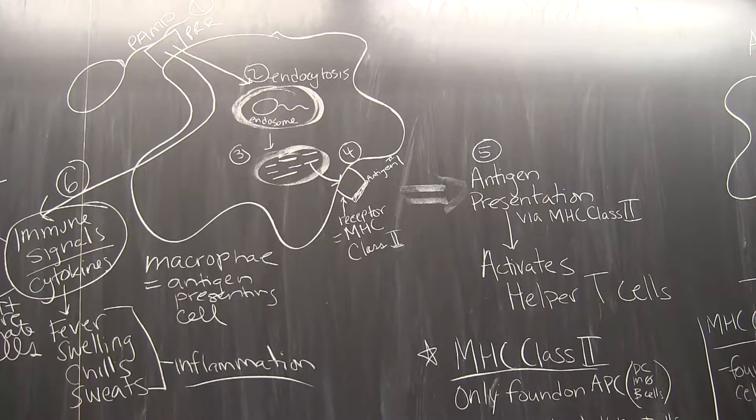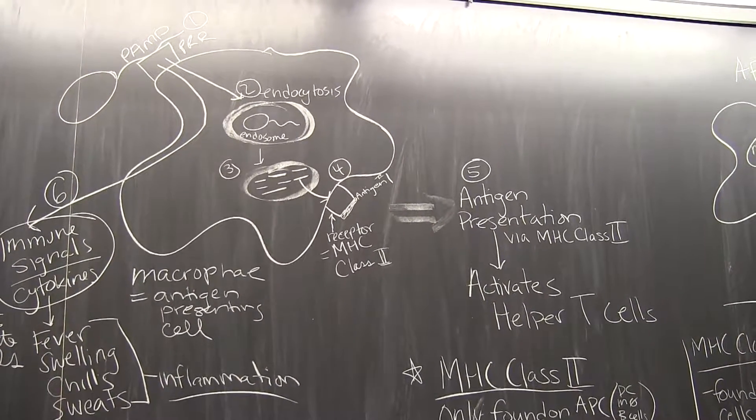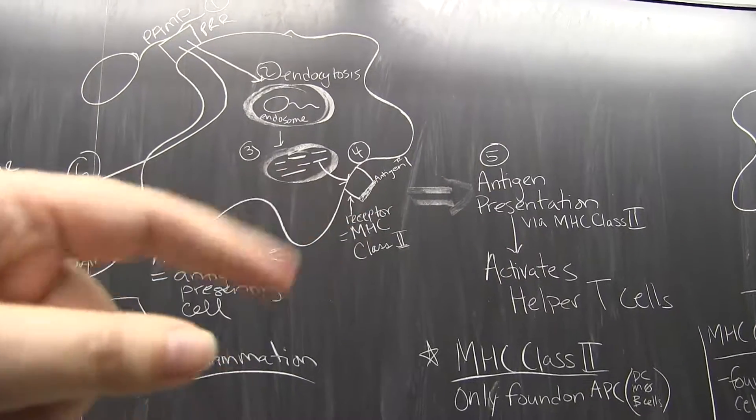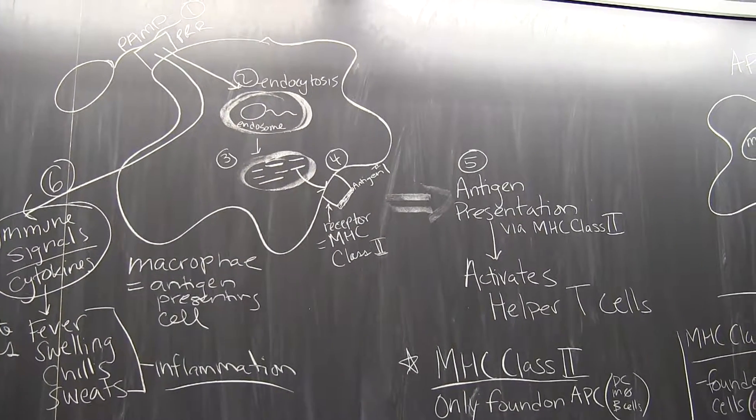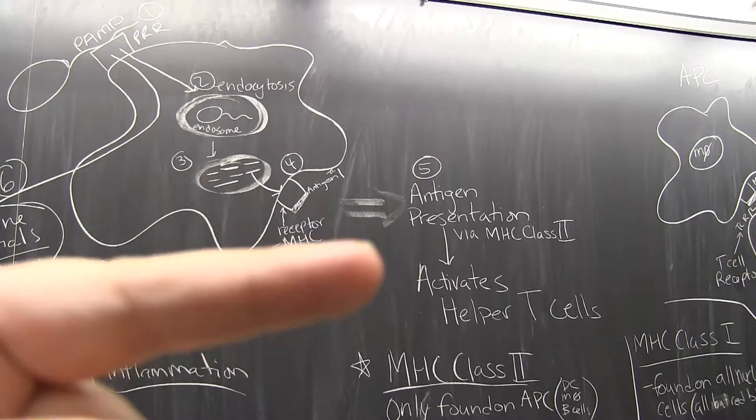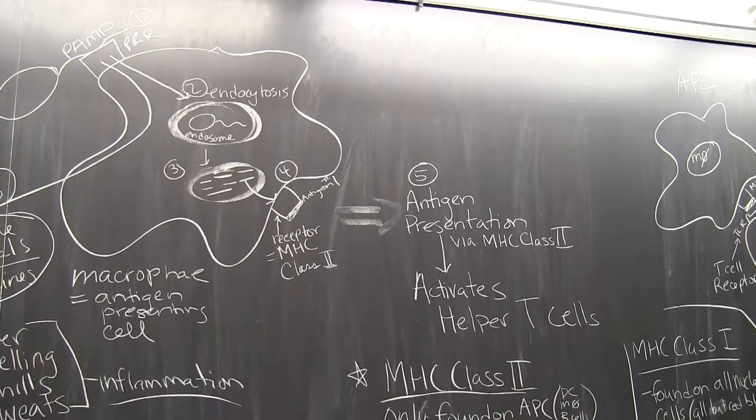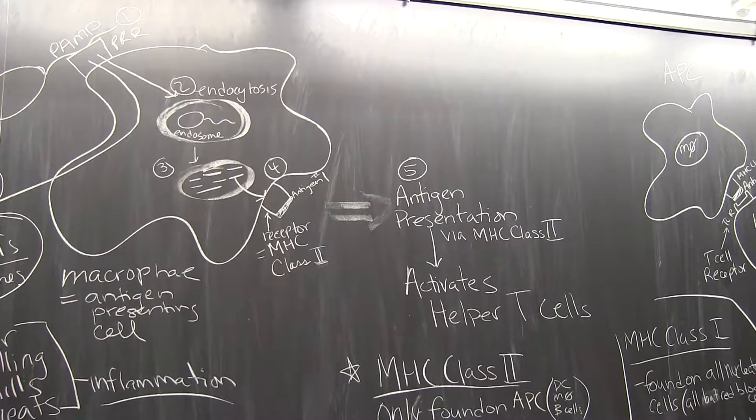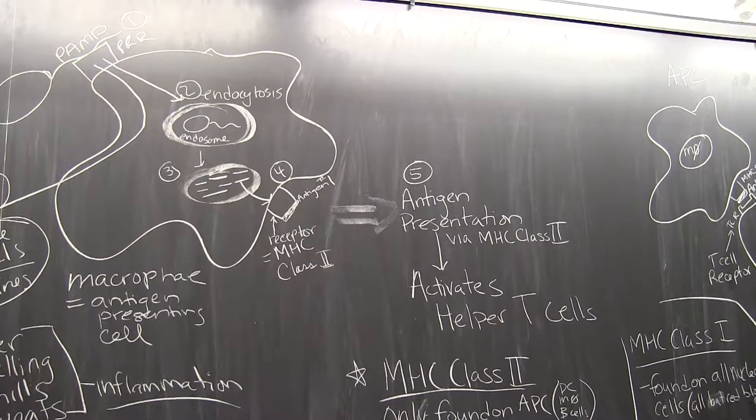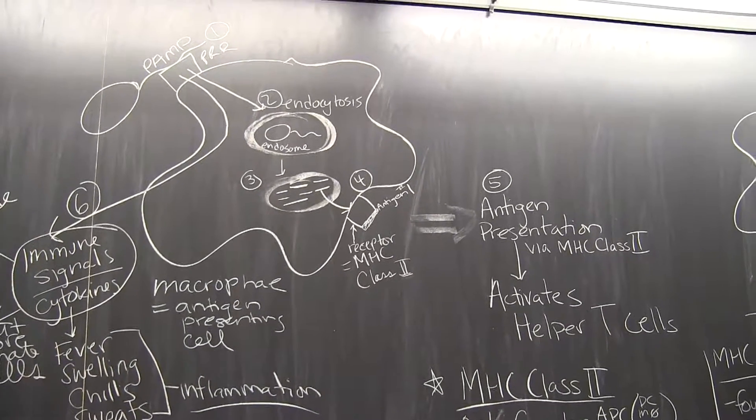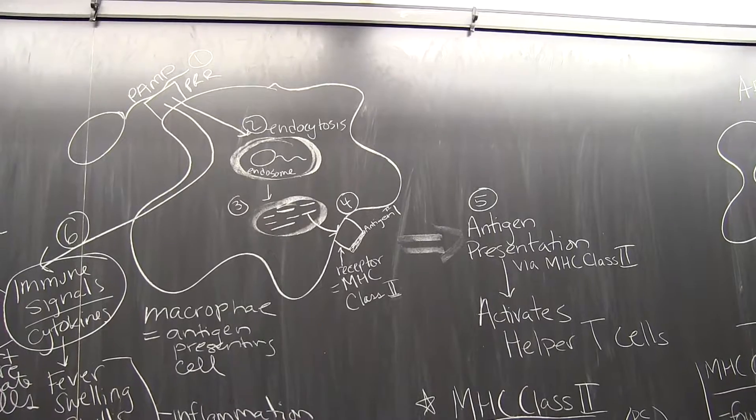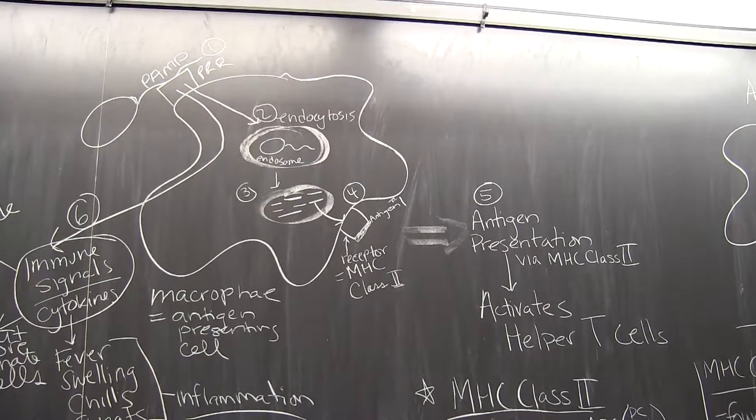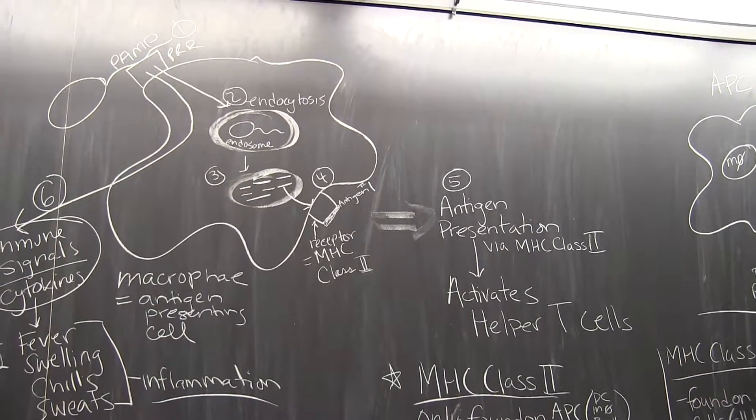Okay, so class 2 MHC only found on antigen presenting cells. So what happens is the antigen gets loaded onto the MHC class 2, and it's this combination of MHC class 2 plus antigen number one that activates helper T cells. And this is through a direct binding of your helper T cells to the MHC class 2 plus antigen number one combination. So we have a direct activation of helper T cells. So that's our first part of how macrophages and dendritic cells present antigens via MHC class 2 receptors, and how they activate helper T cells.